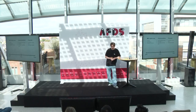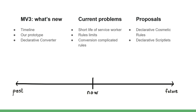My presentation can be divided into three main sections. First, the past: a brief introduction to what MV3 is, what we have accomplished so far, and a quick overview of how it works. Next, the present: the key challenges we have faced and continue to encounter daily in our efforts to maintain the filtering quality of our current extension. And the next one is the future: several ideas of how to make MV3 even better.